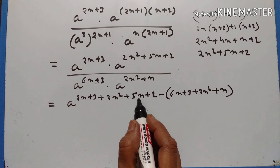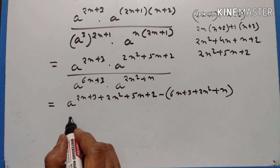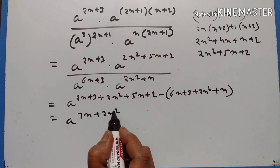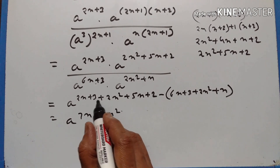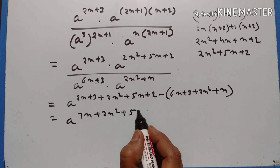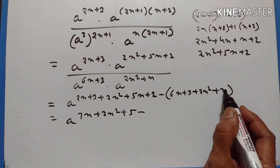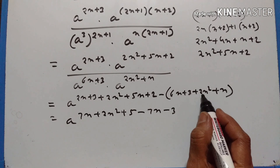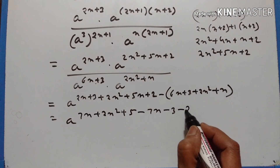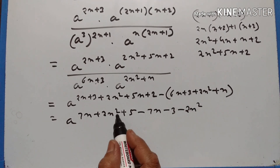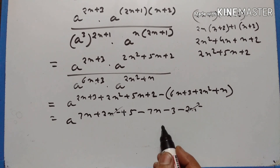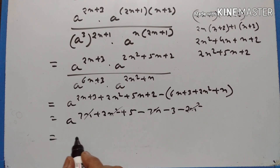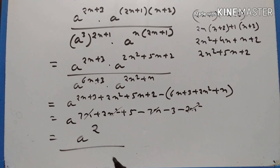2n plus 5n is equal to 7n. a to the power of 7n plus 2n squared plus 5. 3 plus 2 is equal to 5. Minus 6n plus n is equal to 7n. Minus 7n plus 3 becomes minus 3. 2n squared becomes minus 2n squared. 2n squared and minus 2n squared cancel out. Plus 7n minus 7n cancels out. 5 minus 3 is equal to 2. So the result is a to the power of 2, that is a squared.